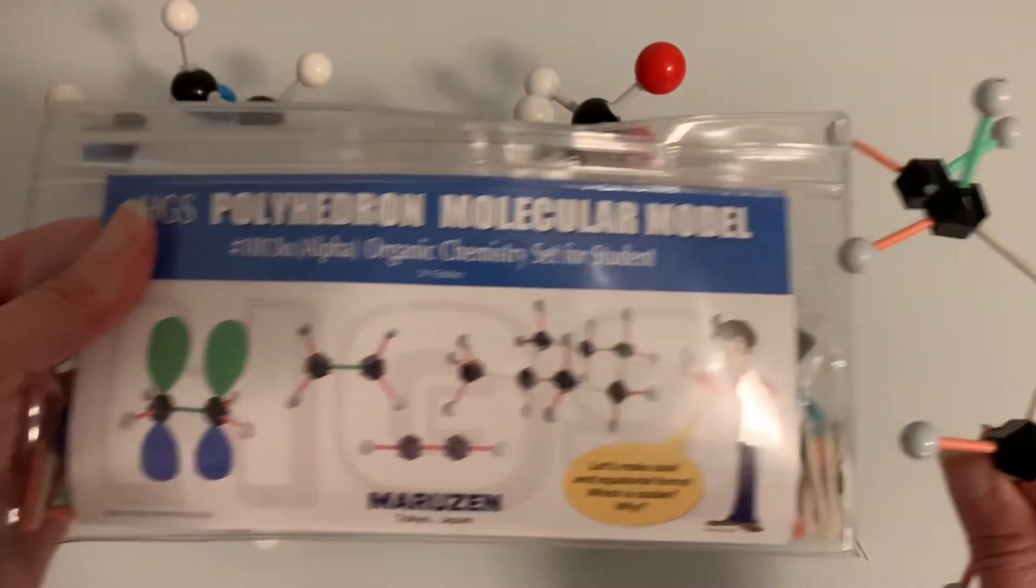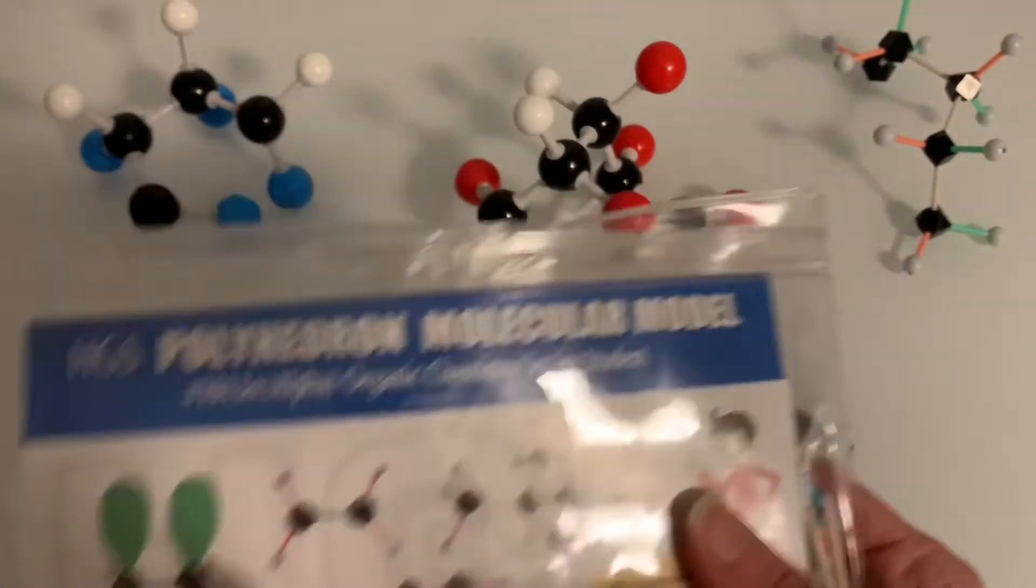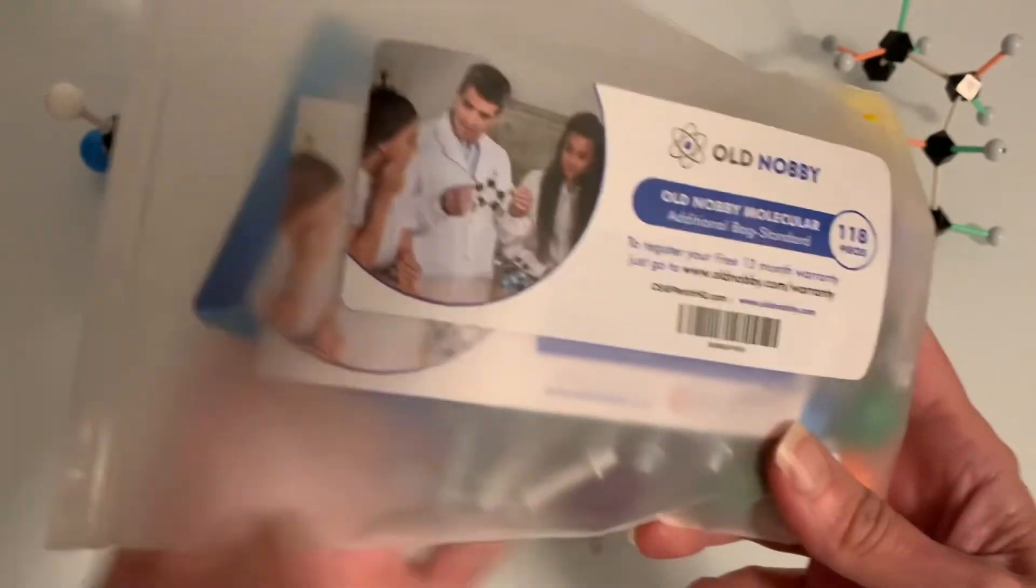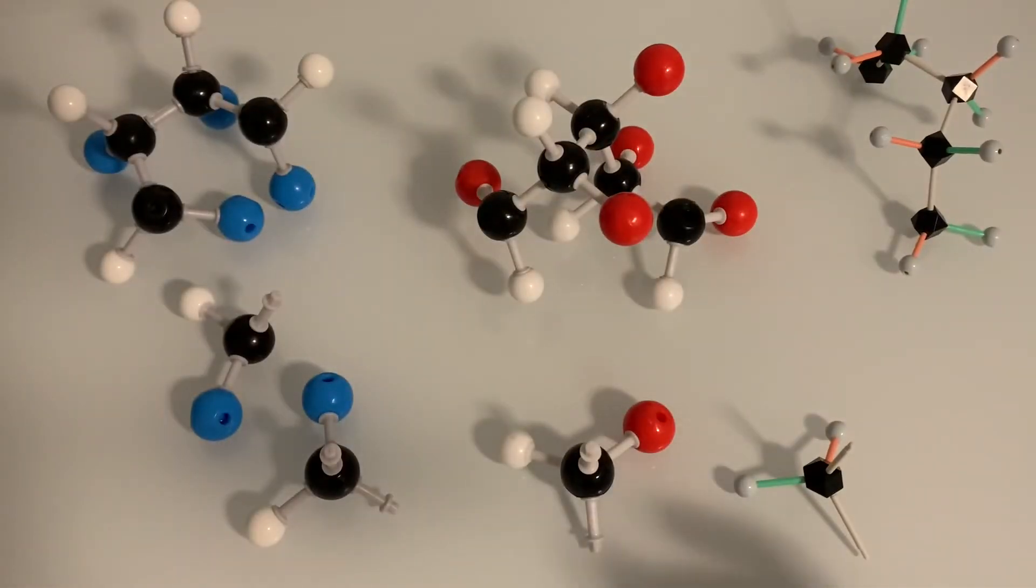My favorite set for an organic student is anything by HGS Polyhedron. And if you are a general chemistry student or you just really like the look of a bubbly set, then I recommend something by Old Knobby.